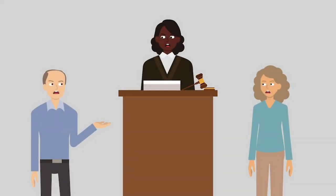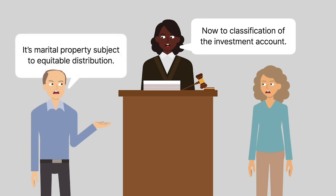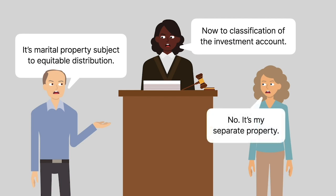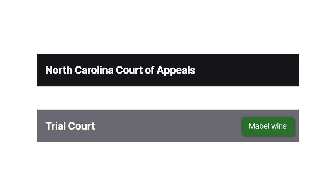When Richard and Mabel divorced, a dispute arose as to the investment account's classification. Richard argued that it was marital property, subject to equitable distribution. But Mabel argued that it was her separate property. The trial court agreed with Mabel, excluding the account when dividing the marital assets. Richard appealed to the North Carolina Court of Appeals.